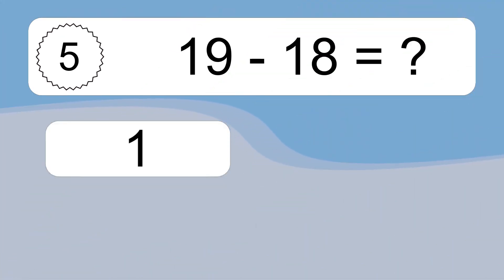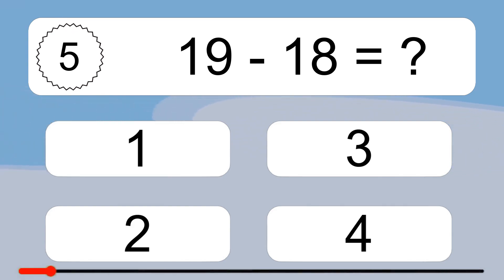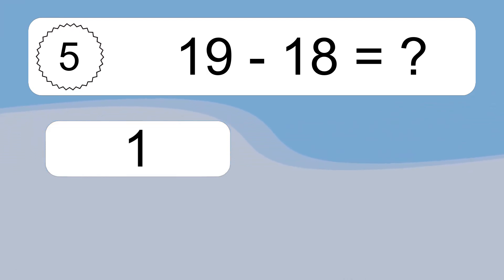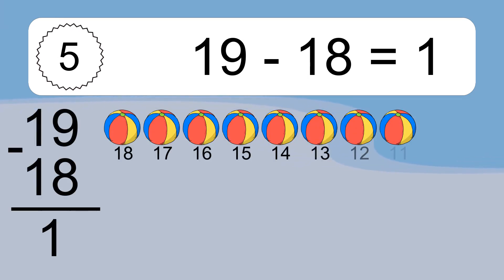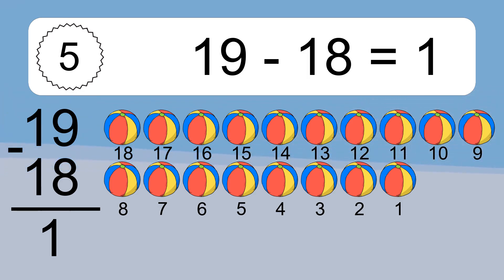19 minus 18 equals what? 19 minus 18 equals 1. Let's count it: 18, 17, 16, 15, 14, 13, 12, 11, 10.